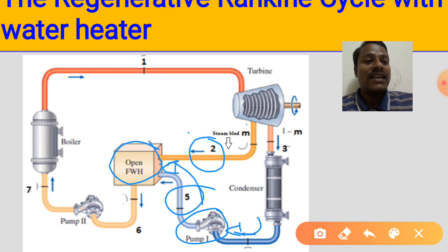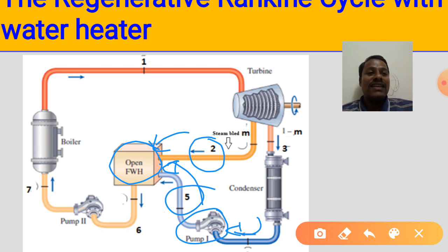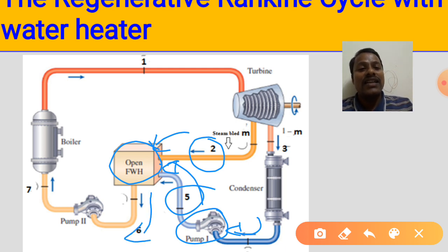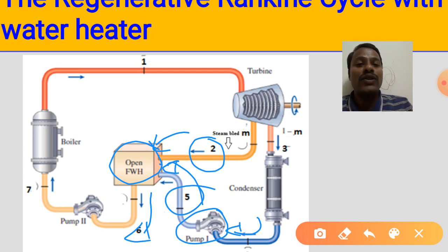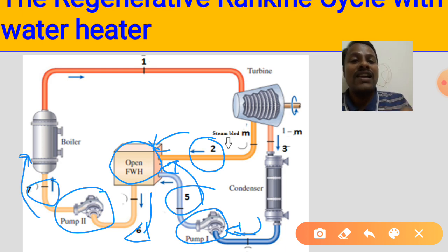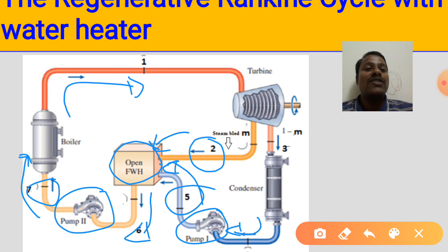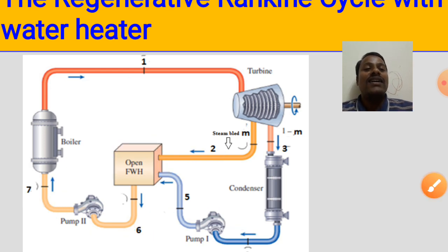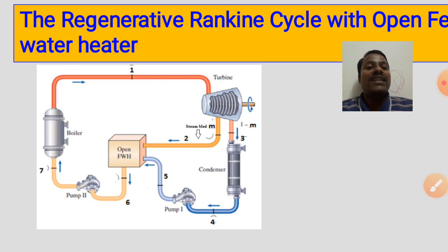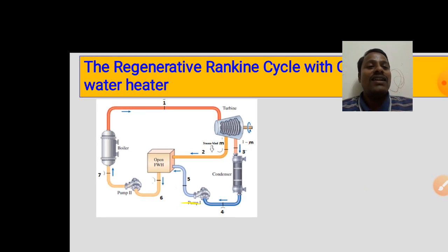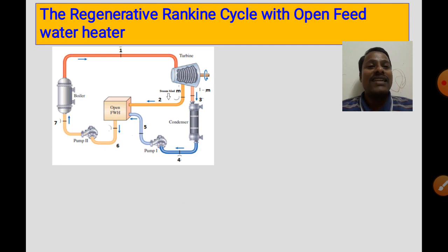Inside the open feed water heater, the condensate and the bled steam are physically mixed, and heat is added to the condensate. The condensate at state 6 comes out at a higher temperature. Pump 2 then pumps this condensate at state 7 into the boiler, where it absorbs heat energy q1 and comes out at state 1, completing the cycle. This is how the open feed water heater is used in the regenerative Rankine cycle.